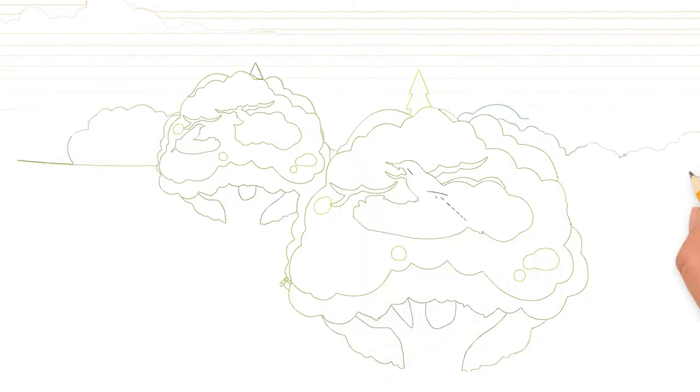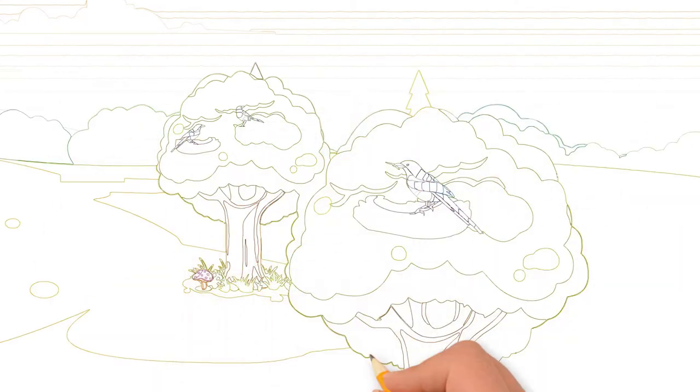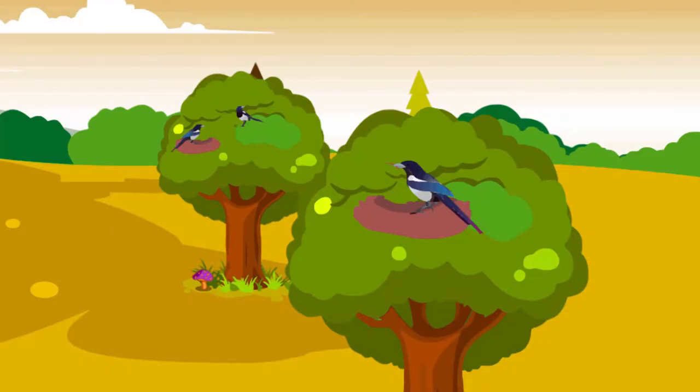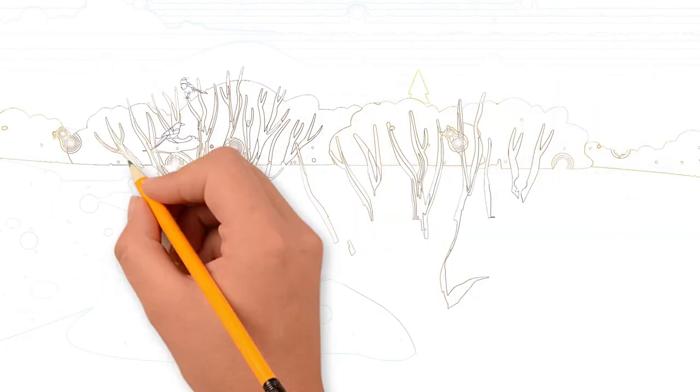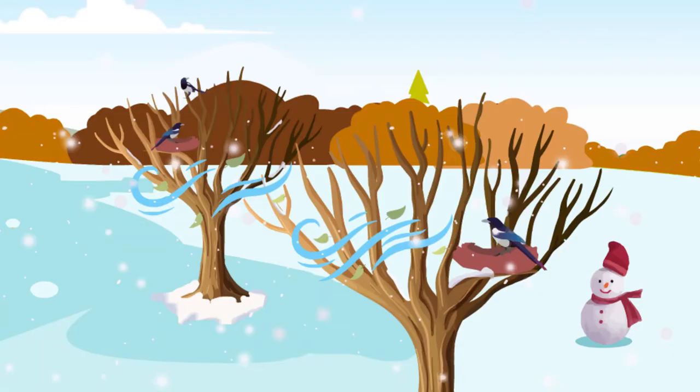This was a habitat for the magpies. They would build nests on fruit trees for winter. In winter, it was very cold. After a lot of snowy days, magpies couldn't find any food.